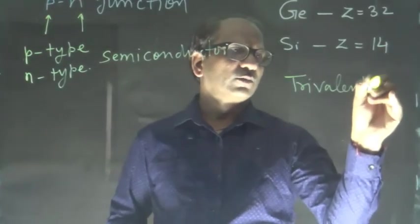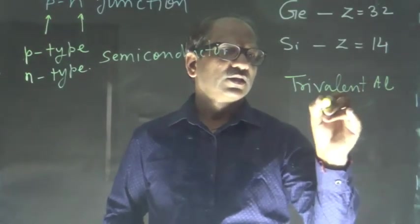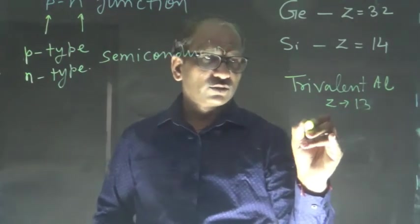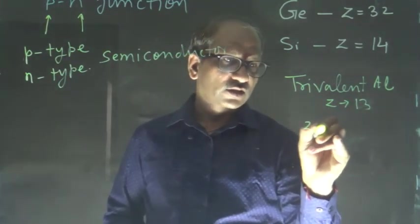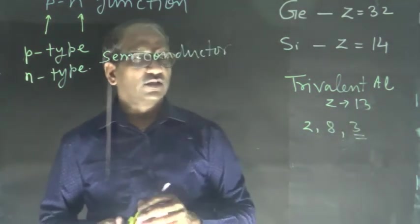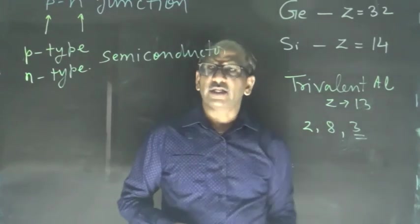Like aluminum, Z is equal to 13. So you know that this is 2, 8, and 3. There are three electrons in the outermost shell.